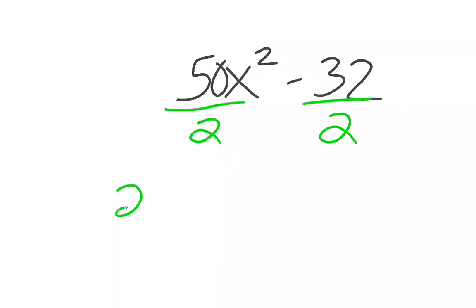And that is going to help us when we need to factor completely, when we have things like 50x squared minus 32. So I need to look for a GCF, which is 2, and I need to divide both of my terms by 2, which leaves me with 25x squared minus 16.